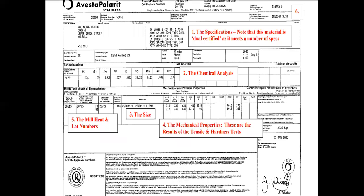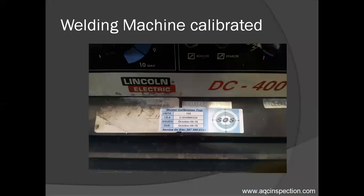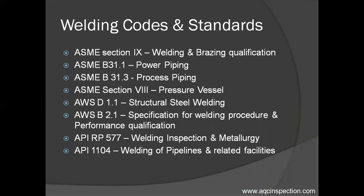Before preparing a WPS, it is essential to verify the material test certificate of the base metal and the batch test certificate of the filler metal. Also make sure the weld machine is properly maintained and calibrated. A few of the codes and standards for preparation of a WPS and welder qualification are given here. Today we are going to discuss preparation of WPS and welder qualification based on ASME Boiler and Pressure Vessel Code Section 9.